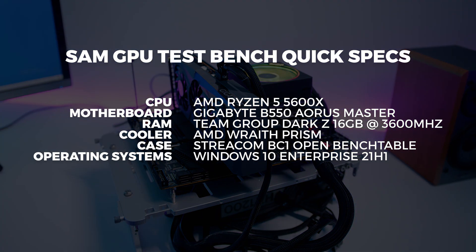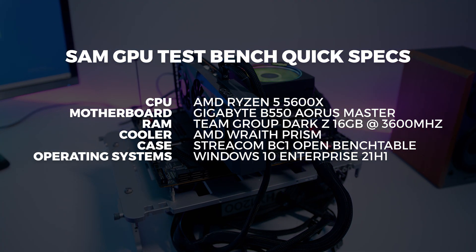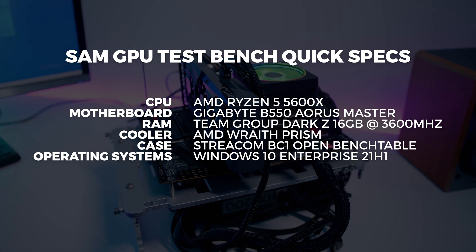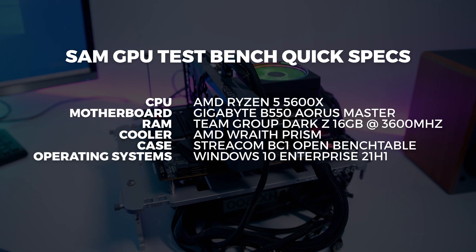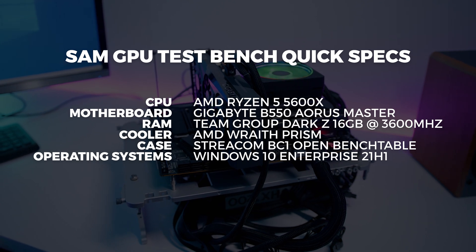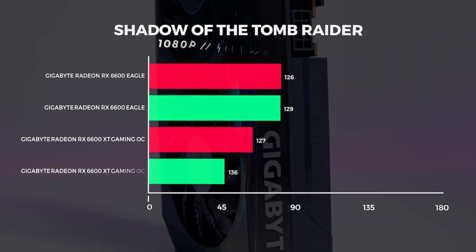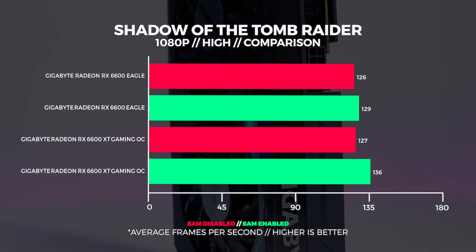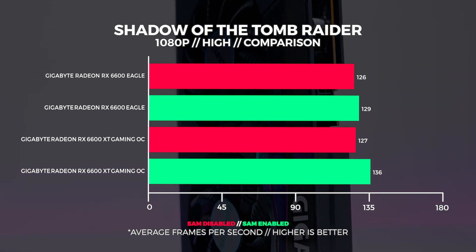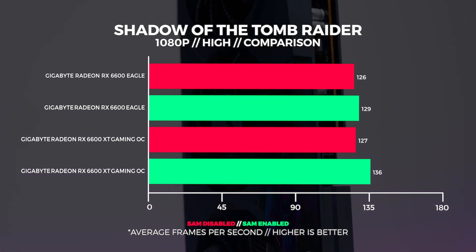Because this card — like other Radeon 6000 GPUs — supports Smart Access Memory, I wanted to see what the performance difference was with SAM enabled versus stock on a Ryzen 5000 system. I put together a quick test system with the Ryzen 5 5600X and retested both the 6600 XT and the 6600 to see if there was a noticeable performance uplift. I only ran six tests in total since this was just a fact-finding exercise — I didn't want to spend too much time on it.